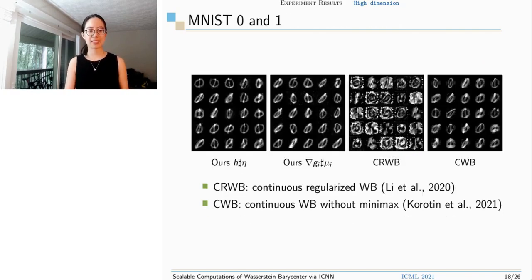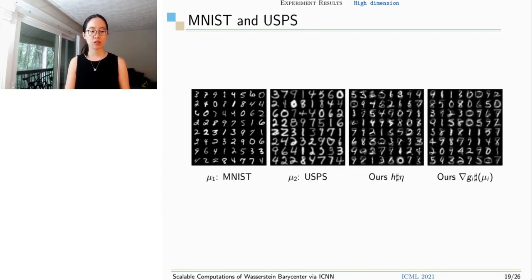In this MNIST example, the first marginal is an empirical distribution of digit zero samples, and the second marginal is of digit 1. Both of our algorithm and continuous Wasserstein barycenter without minimax give reasonable results. We also try to fuse MNIST and USPS. MNIST digits are skinny and USPS are kind of bold. The barycenter digit absorbs both of their features, so it's neither too skinny nor too bold.